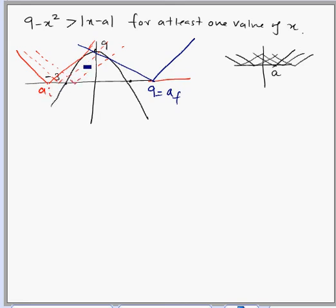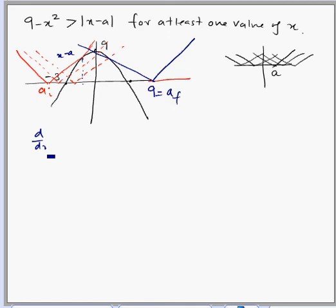To calculate the initial value a_i, we find the x-coordinate where the line x - a is tangent to the parabola. This means the slope of the tangent to 9 - x², which is d/dx(9 - x²) = -2x, must equal d/dx(x - a) = 1. So -2x = 1.